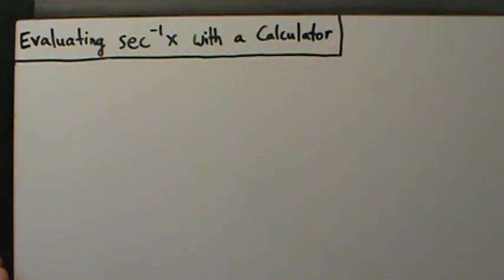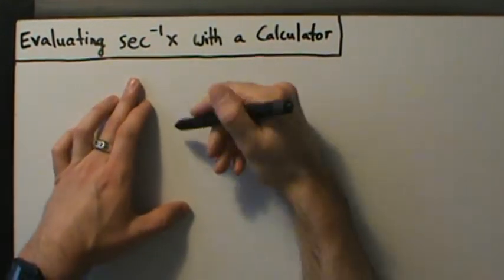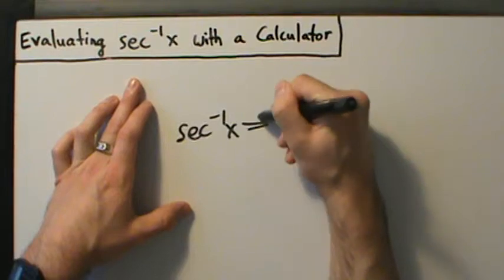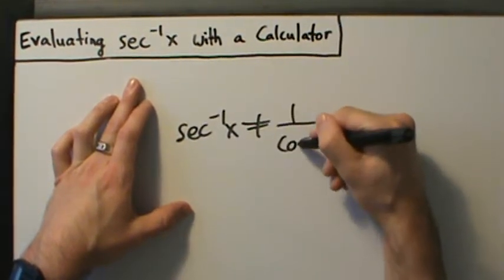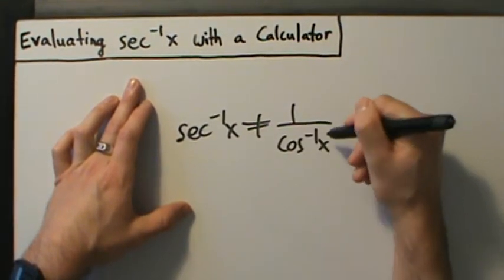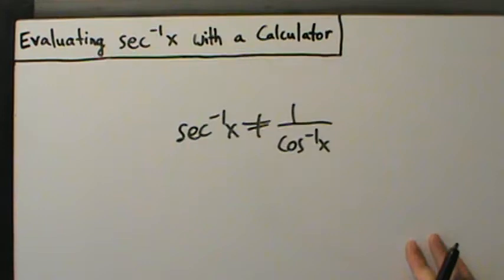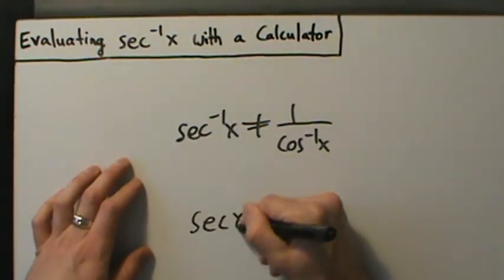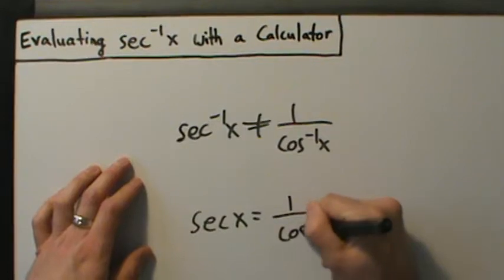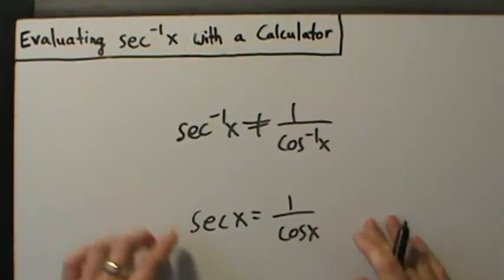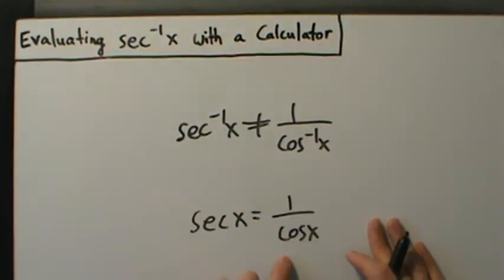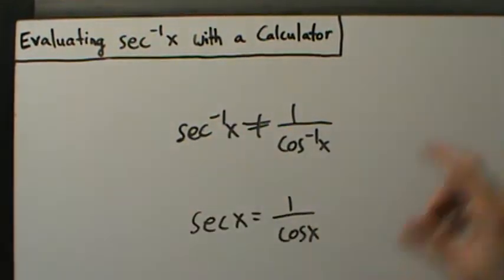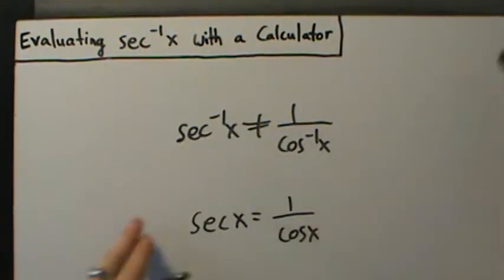What we need to know is that the inverse secant of x is not equal to the reciprocal of the inverse cosine of x. It's unfortunate that's not true, because for regular trig functions we do know that secant is 1 divided by cosine of x — but this does not hold for the inverse trig functions. We already talked about that in an earlier video.